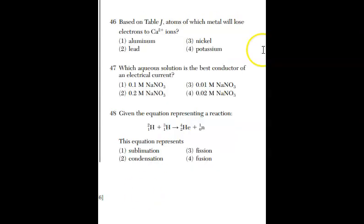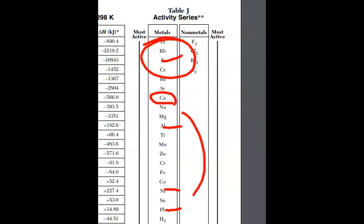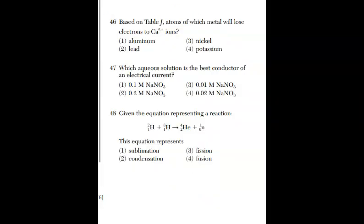So for 46, we got to go to reference table J. We're looking for a metal that's going to lose electrons to calcium ions. Now we have these four metals. You need to know what the symbols are. Aluminum is Al, lead Pb, nickel Ni, and potassium K. If you don't, you have to go to reference table S first, then table J. Here's our calcium and the four metals again. Aluminum, lead, nickel, and the last one is potassium. There's three on the bottom and one on the top. Potassium is a more active metal than calcium. So therefore, potassium's electrons will go to the calcium ions. So for 46, the answer is 4.